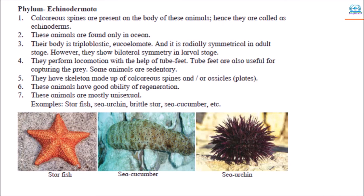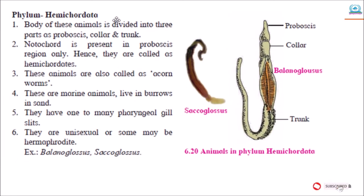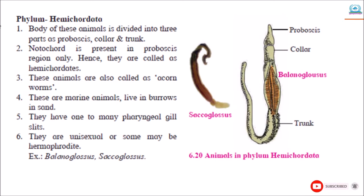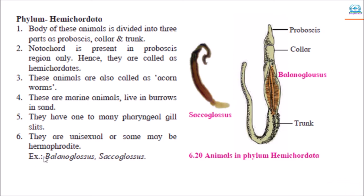Next phylum is Hemichordata. The body of these animals is divided into three parts: proboscis, collar, and trunk. Notochord is present in the proboscis region only. Hence, they are called hemichordates. These animals are also called acorn worms. These are marine animals that live in burrows in sand. They have one to many pharyngeal gill slits. They are unisexual or some may be hermaphrodites. Example: Balanoglossus or Saccoglossus.